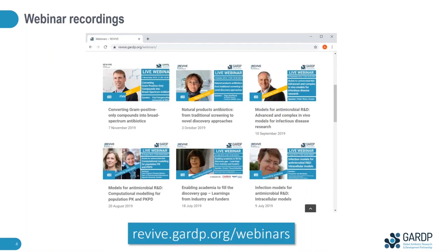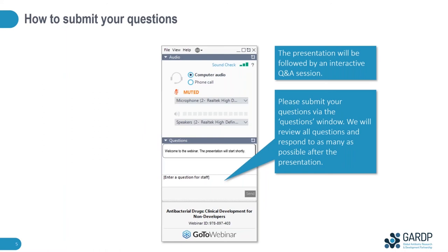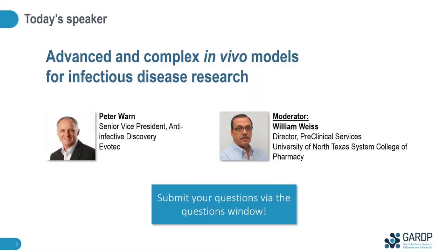All webinars are recorded and can be viewed after the live broadcast on our website revive.gardp.org/webinars. Here you can also find the recording of our first webinar on in vivo models for infectious disease research, which was presented by William Weiss last June. Today's presentation will be followed by a Q&A session. You can submit your questions at any time via the questions window in your webinar control panel. Today's speaker is Peter Warren and our moderator is William Weiss, Director of Preclinical Services at the University of North Texas System College of Pharmacy.